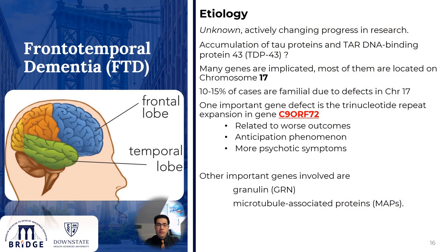The cause of frontotemporal disease is not exactly known, and there is a lot of active research in that area. As far as we know, there is an accumulation of phospho-related tau and abnormal toxic proteins that bind the DNA, causing neuronal cell death, most of which are related to genes located on chromosome 17. About 10 to 15% of cases are familial due to defects in that chromosome.